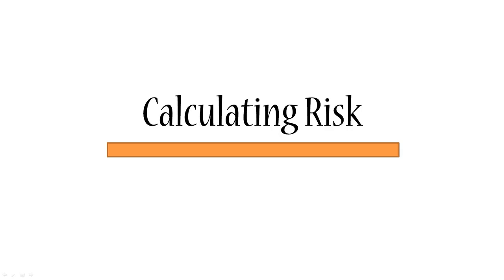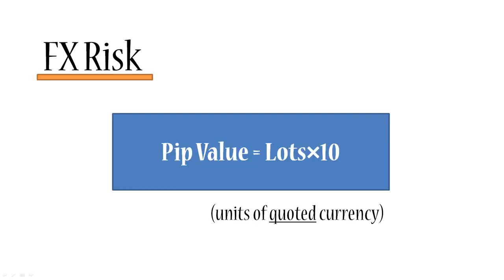This tutorial flows on directly from the previous one. If you skipped the mathematics at the end of the previous tutorial, not a worry — the result we got was that pip value is always equal to lots times 10, and is measured in units of quoted currency. This means that if your currency moves a certain number of pips and you have a transaction with a volume equal to lots, the value of every single pip will be lots times 10, measured in units of quoted currency.